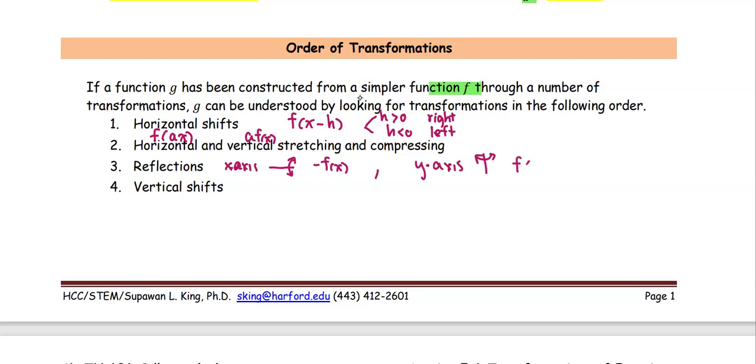Vertical shift means the function added by the value k. k positive, vertical shift upward. k negative, vertical shift downward.